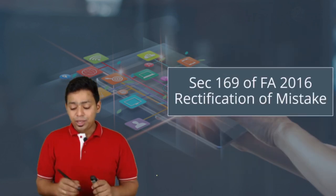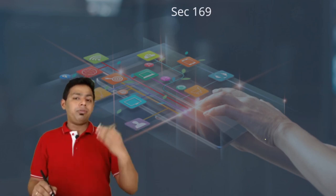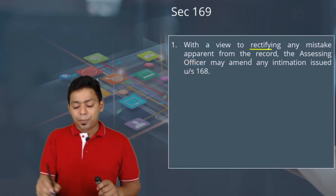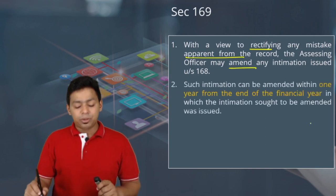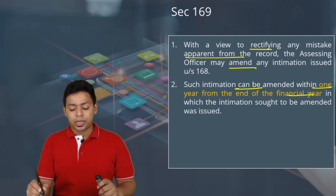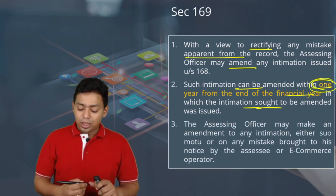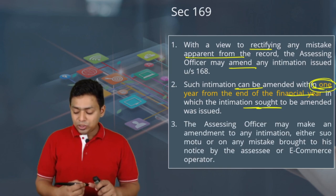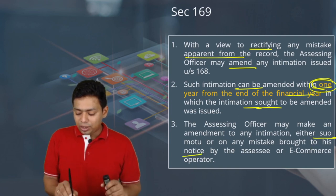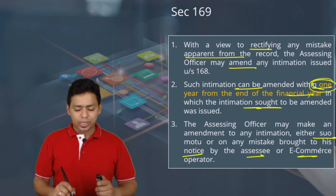Rectification of mistakes: similar to Section 154 of the Income Tax Act, you can apply for rectification here also. With a view to rectify any mistake apparent from the record, the AO may amend any intimation issued under Section 168. Such intimation can be amended within one year from the end of the financial year in which the intimation sought to be amended was issued. The AO may make the amendment suo motu or on application by the assessee or e-commerce operator.